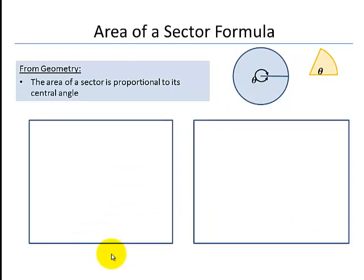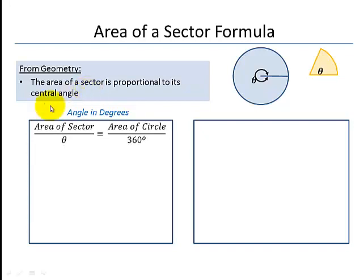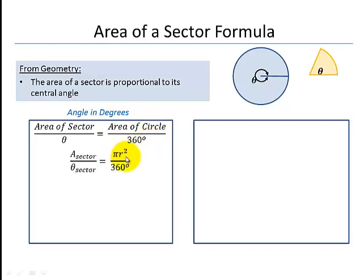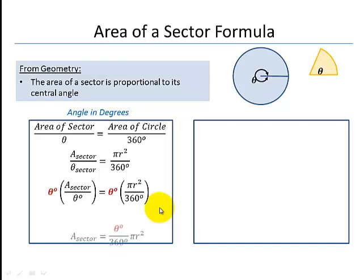We can also develop the area of a sector formula. From geometry, the area of a sector is proportional to its central angle. Starting with theta in degrees: the area of the sector over its central angle equals the area of the circle over 360 degrees. Substituting pi r squared for the circle's area and multiplying each side by the sector's central angle gives: area of sector equals theta over 360 times pi r squared.